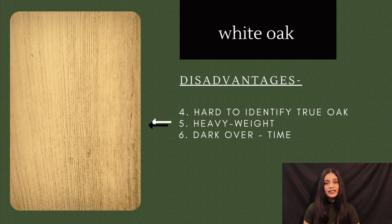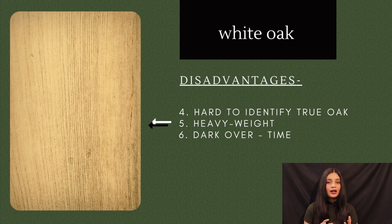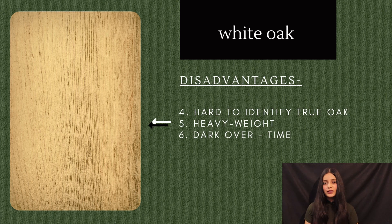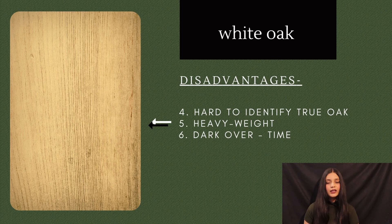Fifth disadvantage is heavy weight — it is heavier than teak, which can make transport difficult. The last disadvantage is that it can darken over time, especially if it is in an outdoor area, though it is normally good with oak wood otherwise.